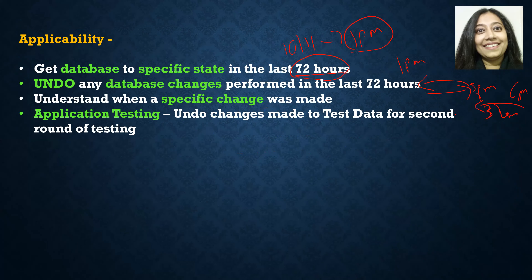Another use case: understand when a specific change was made. If something went wrong with your database and you want to track when that change occurred, you can debug it by backtracking back and forth. For example, if the change was not there at 2 p.m. but was there at 3 p.m., you move to 2:30 — not there. Move to 2:45 — it was there. So the change occurred between 2:30 and 2:45. Move to 2:40 and you can pinpoint the exact time the change was made.